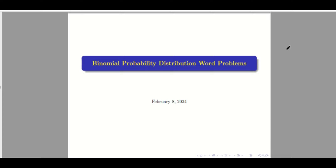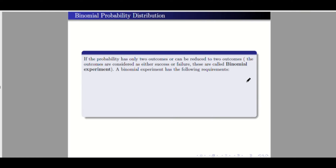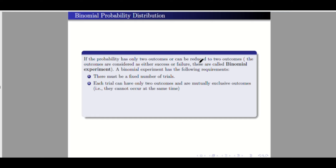If the probability has only two outcomes, or can be reduced to two outcomes, the outcomes can be called either a success or failure. These are called binomial experiments. The following requirements must be met: there must be a fixed number of trials, and each trial can only have two outcomes.